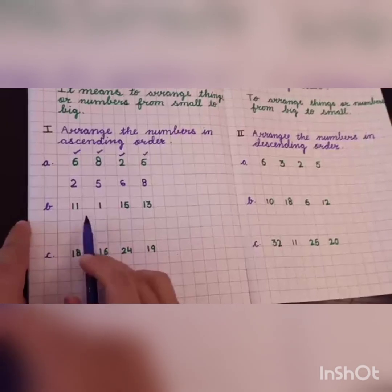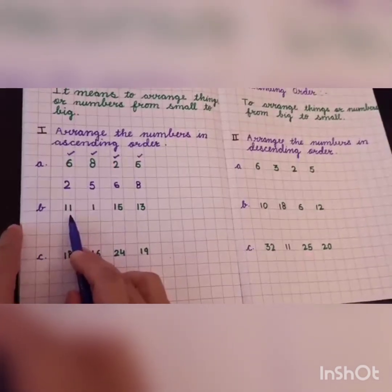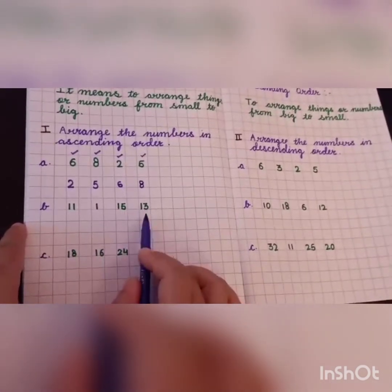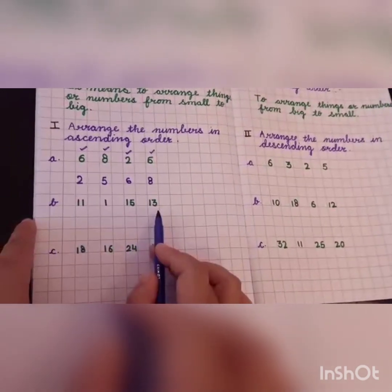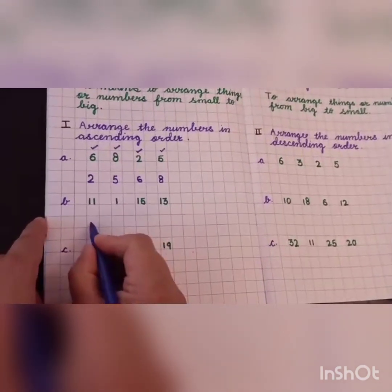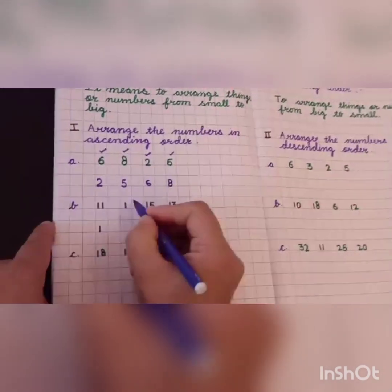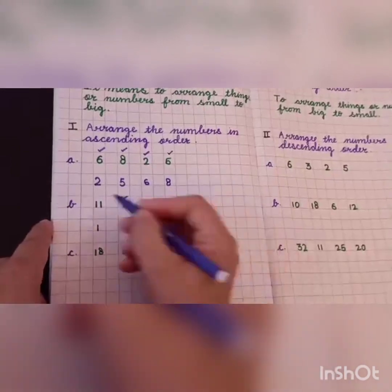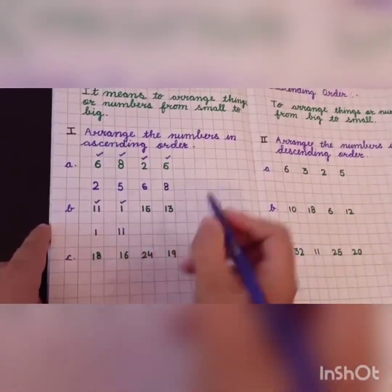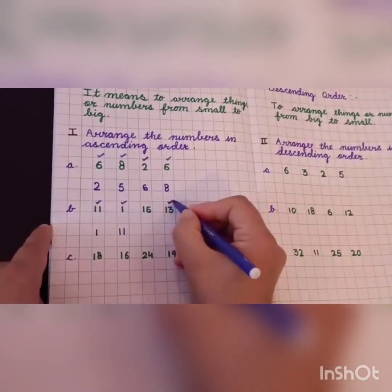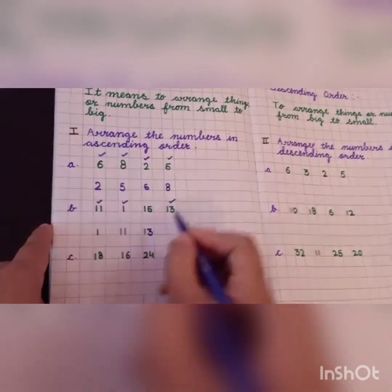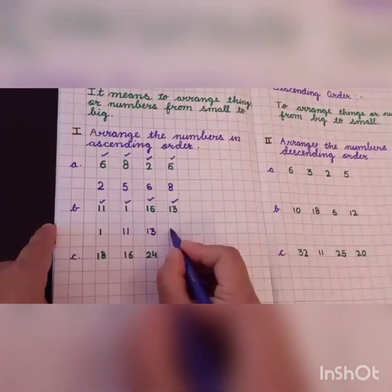Now next one. We have 11, 1, 15, and 13. So which is the smallest number here? 1. Then 11, then 13, and 15.